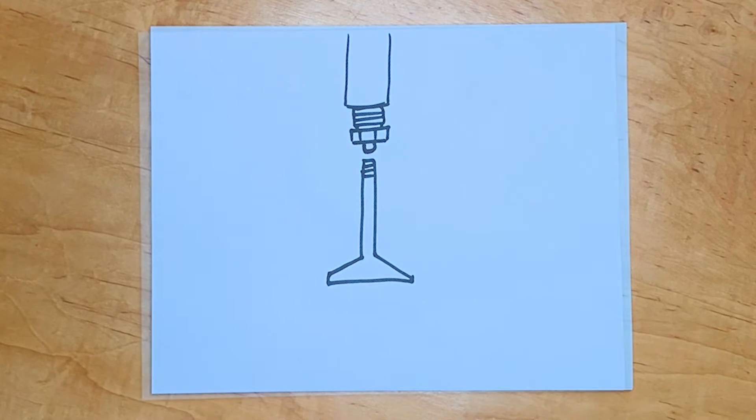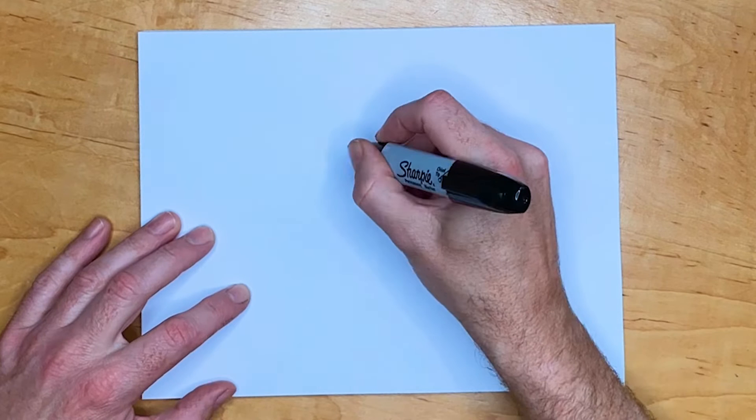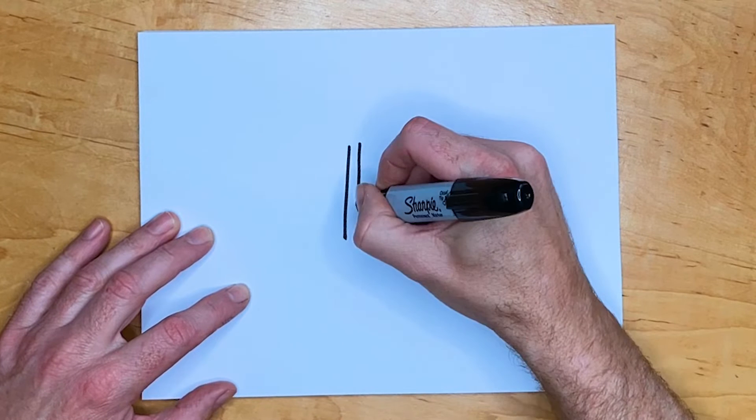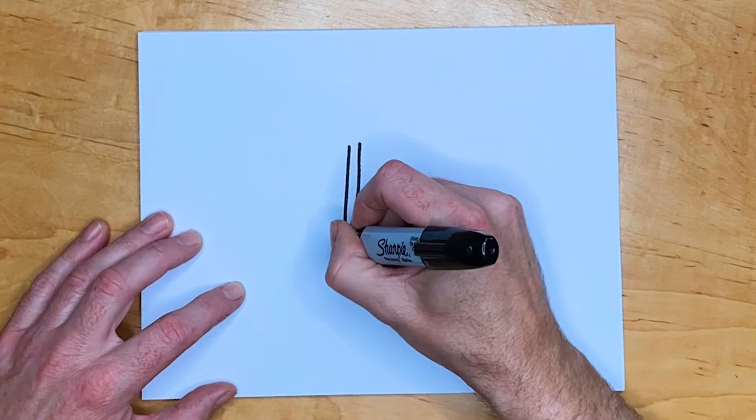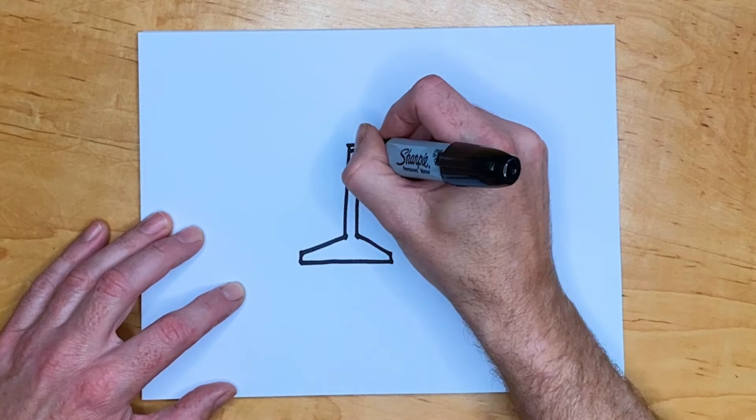It's that small gap that results in the tapping sound that we get the name tappets from, and so even though hydraulic lifters are not tappets and they're not supposed to tap we still use that name today.